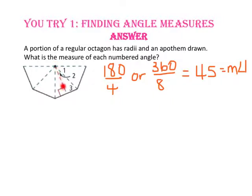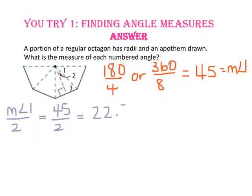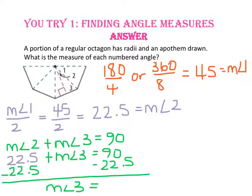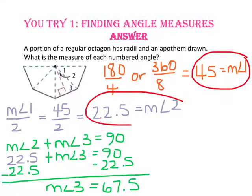For angle 2's measure, the apothem bisects this 45-degree vertex angle, so the measure of angle 2 will be half of the measure of angle 1 — 22.5 degrees. To find the measure of angle 3, we notice that the apothem creates a right triangle. Since the measure of angle 2 is 22.5 degrees and we know this is a 90-degree angle, the measure of angle 2 plus the measure of angle 3 will equal 90 degrees. Substituting 22.5 and solving, the measure of angle 3 equals 67.5 degrees.